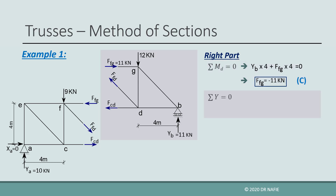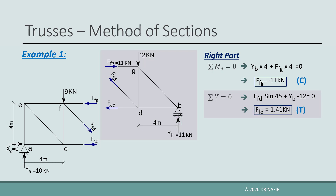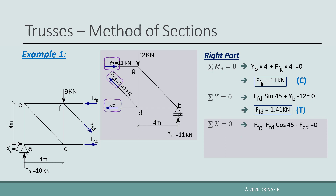Next, we apply sigma Y equals zero. The force in FD will be included in the equation because it has a vertical component and will be the only unknown. By solving sigma Y equals zero, we evaluate the force in FD to be positive 1.41 kN, so it is tension as initially assumed. Finally, we apply sigma X equals zero to evaluate the force in CD, which is found to be positive 10 kN tension.